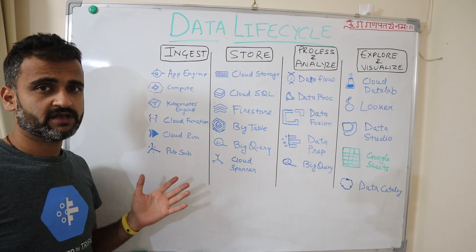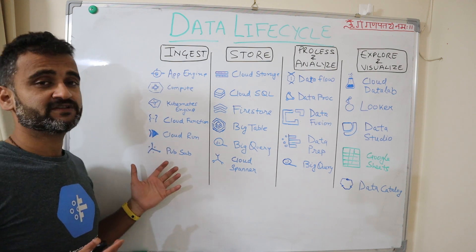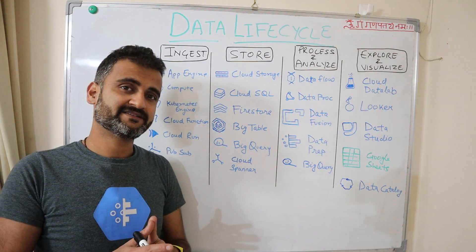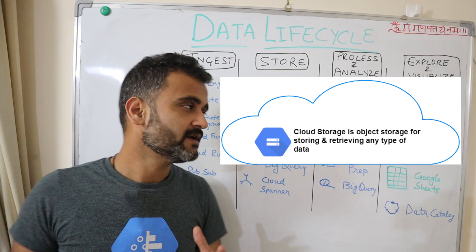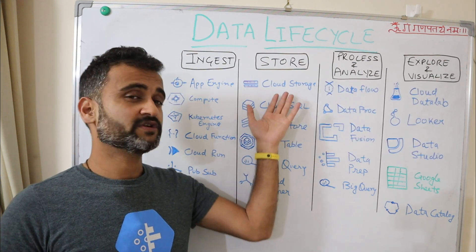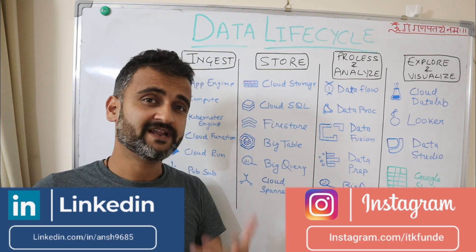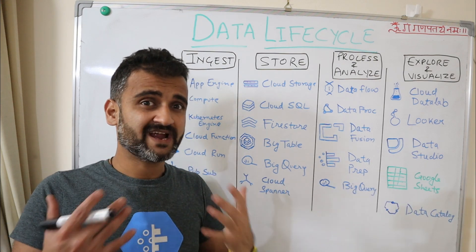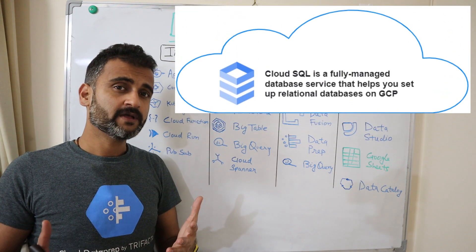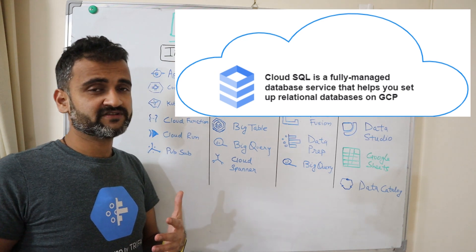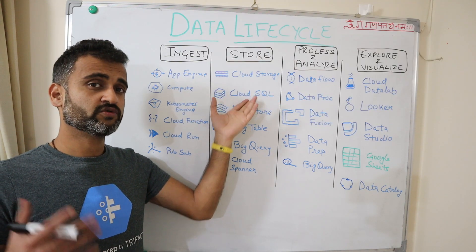Moving on to the storage stage: Cloud Storage is our multi-class, multi-region object storage offering. You can store any kind of data in Cloud Storage, and that's why data lake solutions are primarily based on it. You can store files, CSVs, and even host static websites on Cloud Storage. Cloud SQL is a relational database offering for deploying SQL server instances on GCP to manage your relational database.